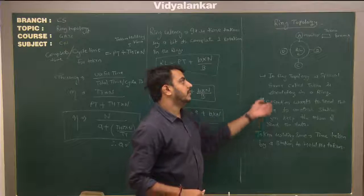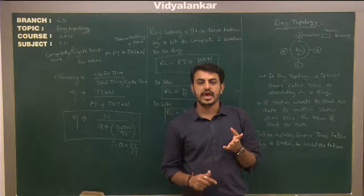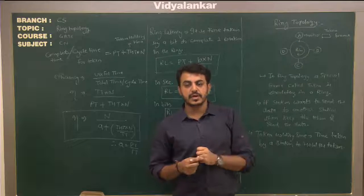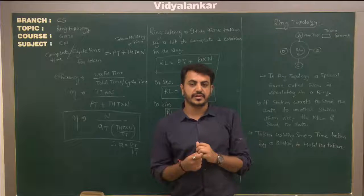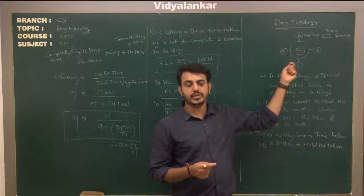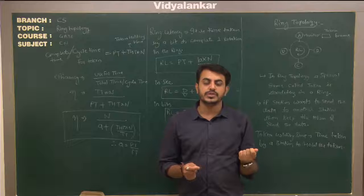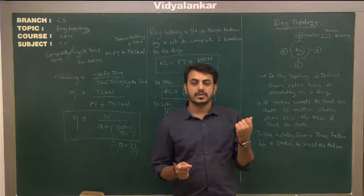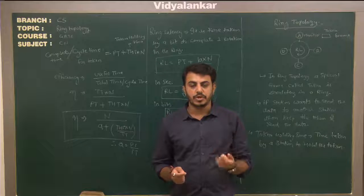In ring topology, there is one station called a monitor station. The monitor station is similar to a server but a little different, because there is a common node which is selected as a monitor. The monitor's responsibility is to start a token frame, because in ring topology every station sends data whenever the token frame is received. This token frame is started by the monitor station.